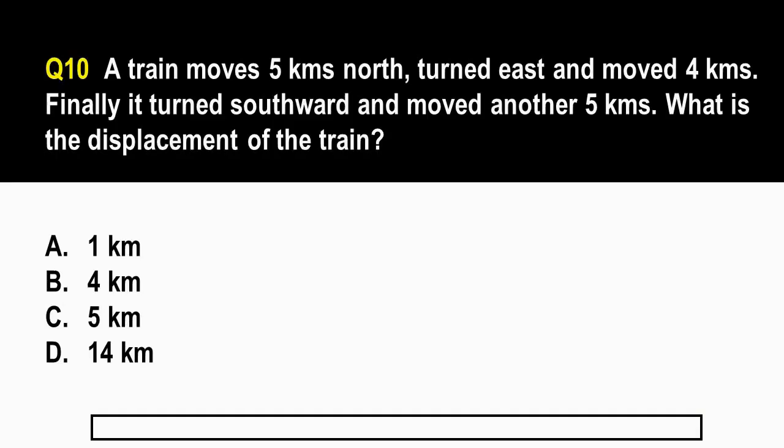Let's now go to question number 10 and let's try some physics stuff. A train moves 5 kilometers north, turned east and moved 4 kilometers. Finally, it turned southward and moved another 5 kilometers. What is the displacement of the train? A, 1 kilometer. B, 4 kilometers. C, 5 kilometers. And letter D, 14 kilometers.